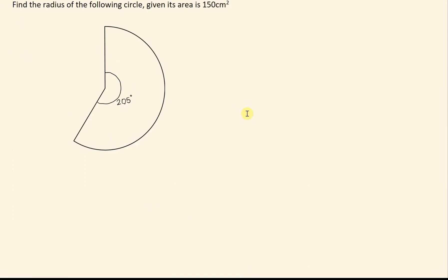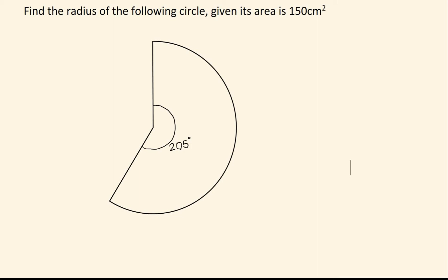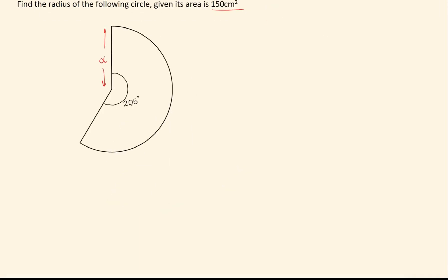Just going through one more slightly harder example. Here again, we're using the area of a sector. So we need to find the radius of this circle, so we're looking to find this x over here. We've got the angle, and we are told the area is 150 centimeters squared. So again, we're going to lay it out the same way. We know the sector will equal the area for a full circle times by the fraction, and we're going to fill in what we know.